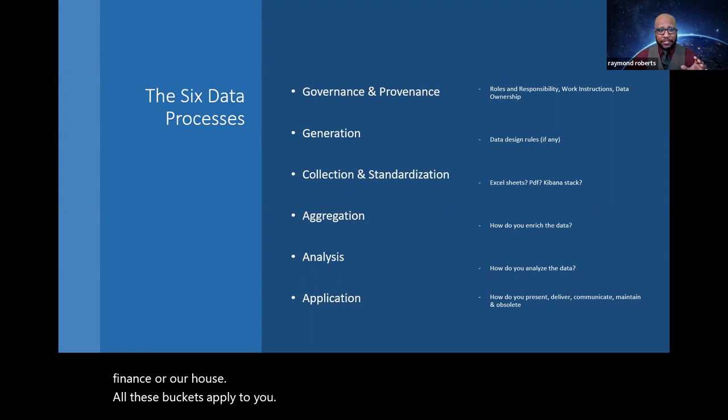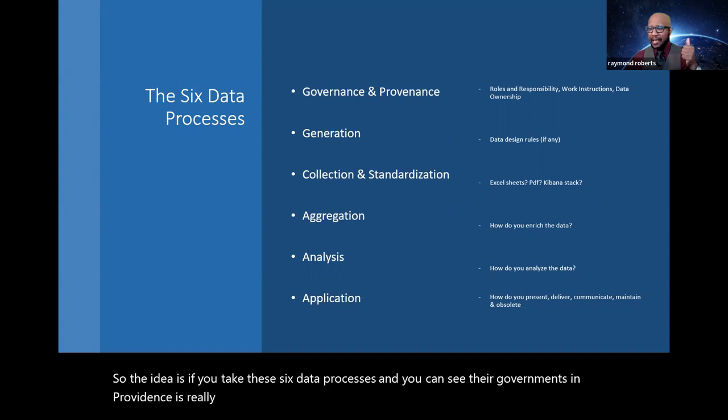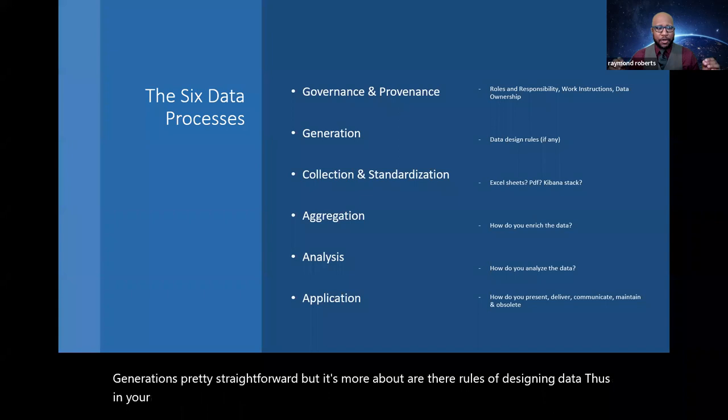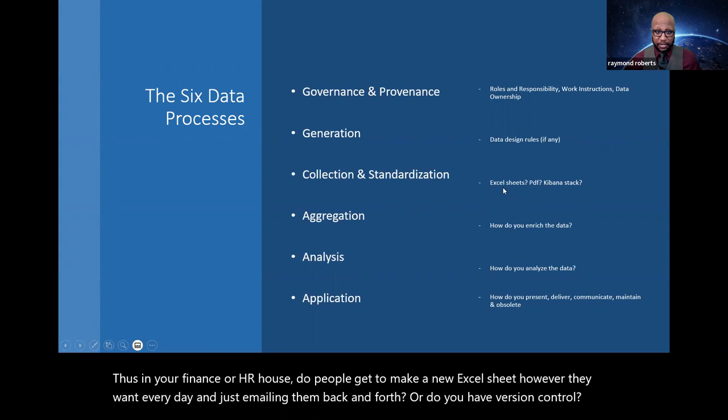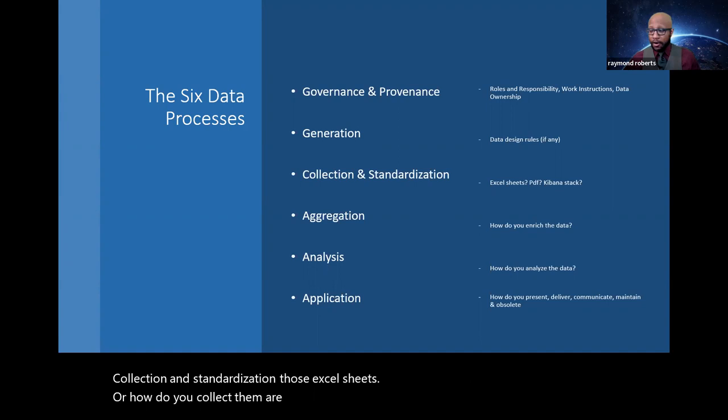Whether you're an engineer writing a log in a machine, or a data scientist, or you're the finance or HR house, all these buckets apply to you. So the idea is, if you take these six data processes, and you can see there, governance and provenance really, what are the rules? And provenance is, how do you know you're following the rules? Generation is pretty straightforward, but it's more about, are there rules of designing data? In your finance or HR house, do people get to make a new Excel sheet however they want every day, and you're just emailing them back and forth? Or do you have version control?